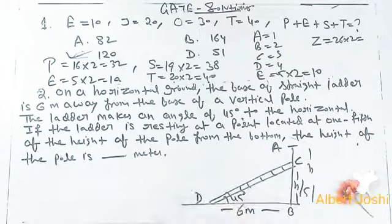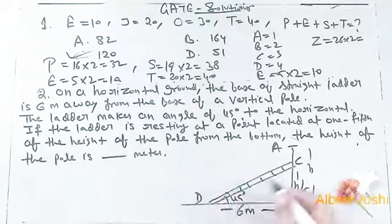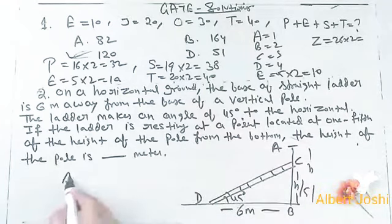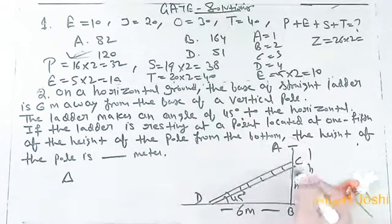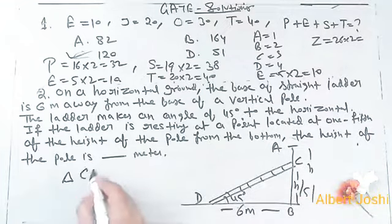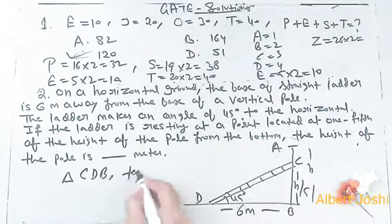So this is A, this is B, this is C, this is D. He is asking the height of the pole from the bottom. Now in triangle CDB, tan 45 degrees is equal to height upon base.